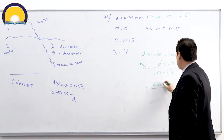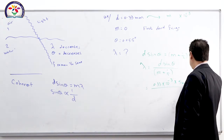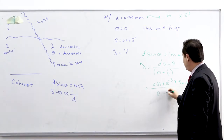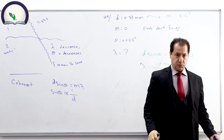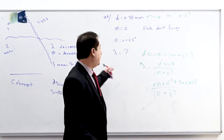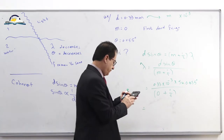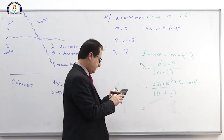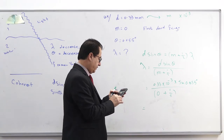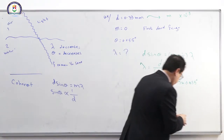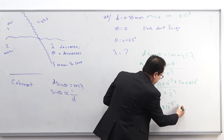Substituting: λ = (0.33 × 10⁻³) × sin(0.055°) / (0 + 0.5). Calculating this gives λ = 6.33 × 10⁻⁷ meters.